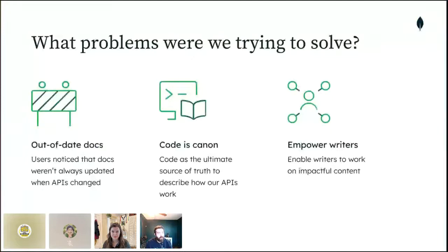We were trying to solve three main problems. The first is out-of-date docs, which presented a less than ideal user experience. We regularly received feedback from users and support engineers about this. MongoDB also offers several tools based on the API, like our Atlas Terraform provider, and issues in the documentation cascaded to issues with these tools. We needed to provide our users with more accurate information.